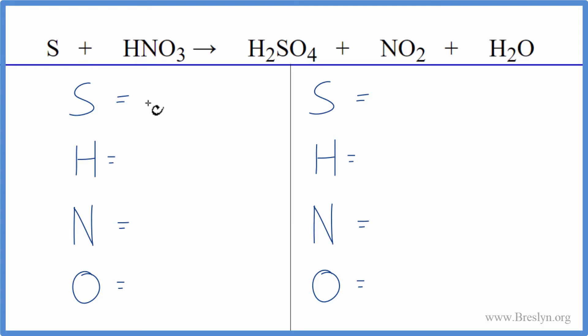We have one sulfur, one hydrogen, one nitrogen, and three oxygens. On the product side, we have the one sulfur, two hydrogens, plus these two, so four hydrogens, one nitrogen, and then oxygens, four plus two is six, plus one, seven oxygens.